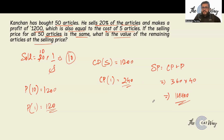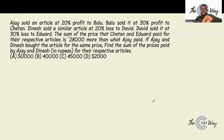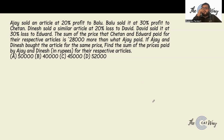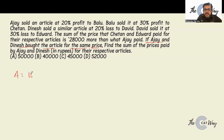Next question: Ajay sold an article at 20% profit to Balu. Balu sold it at 30% profit to Chetan. Dinesh sold a similar article at 20% loss to David. David sold it at 30% loss to Edward. The sum of prices that Chetan and Edward paid is 28,000 more than what Ajay paid. Ajay and Dinesh bought the article for the same price — let's say 100x.